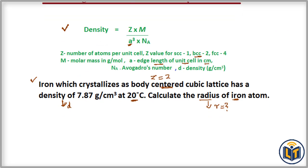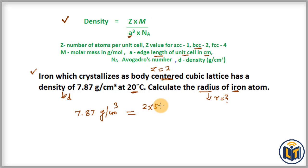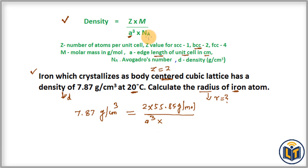Let's plug in the values. Density is 7.87 gram per centimeter cubed, equal to Z (which is 2) multiplied by M, the atomic mass of iron, which is 55.85 grams per mole, divided by a-cubed — the volume of the unit cell, which is what we are going to calculate.